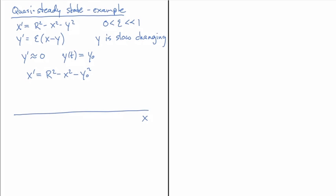Here's x, and this is just a parabola for any y-naught. It'll be symmetric about the origin, with a root at minus the square root of r² - y₀², and another one at square root of r² - y₀².